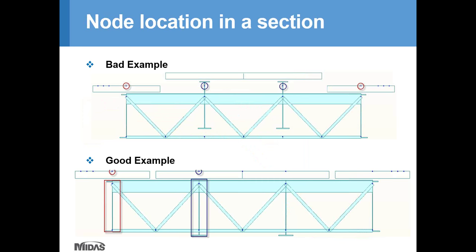Why are node locations important to define properly in section properties? The two examples shown contain the same material and section properties. However, due to a lack of understanding of node location in section properties, in the bad example the two interior girders go up a little bit compared to the two exterior girders, even though the nodes are located on the same elevation. When modeling a steel composite girder bridge, you should keep in mind that node location on different girders should be on the top center to avoid a transversely fluctuating deck.